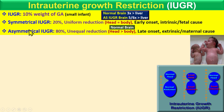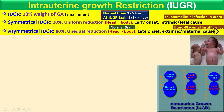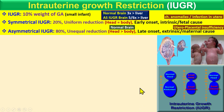In asymmetrical IUGR, the brain is normal, while in symmetrical IUGR the brain is also compromised. Symmetrical IUGR is early onset and mostly due to fetal or intrinsic causes — mainly chromosomal anomalies or intrauterine infection. Asymmetrical IUGR is late onset and mostly due to maternal conditions, for example uteroplacental insufficiency, meaning insufficient blood supply from mother to fetus. This accounts for 80% of cases.